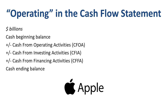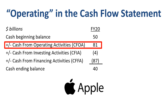For Apple in fiscal year 2020, they started the year with $50 billion, generated $81 billion in cash from operating activities (CFOA), had a net cash outflow of $4 billion in cash from investing activities (CFIA), and a net cash outflow of $87 billion in cash from financing activities (CFFA), to end the year with $40 billion. Just to clarify, numbers between parentheses are negatives. We will zoom into the positive $81 billion of CFOA — a net cash inflow — throughout this video.